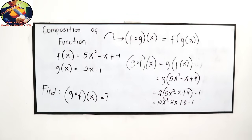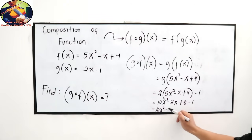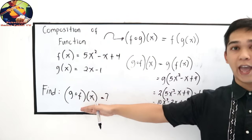This time, combine like terms. So, copy 10x squared minus 2x. 8 minus 1, that is 7. So this is the value of our g composed of f of x. That's how you solve composition of functions.